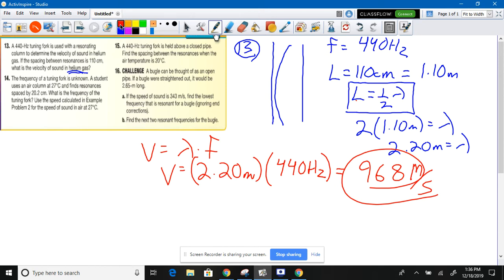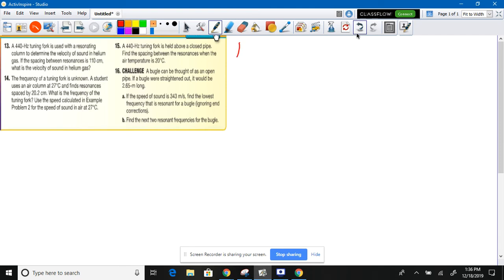For number 14, Chris Parham. Spray bottle. Again, draw yourself a pipe. You got a pipe with waves in it, pipe with sound in it. The frequency of a tuning fork is unknown. So you got the tuning fork down here. A student uses an air column at 27 degrees and finds resonances spaced by 20.2 centimeters. So the length of the tube is 20.2 centimeters. Do we use centimeters or meters? We use meters. 0.202 meters. That's the length.